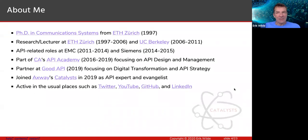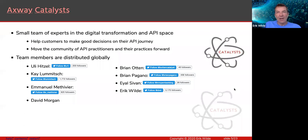A little intro and first very briefly about my background. My name is Eric Wilde, I'm a computer scientist by training. I have worked in a variety of companies and most recently I am with Axway's Catalyst team. The Catalyst team at Axway has the goal and the mission to help companies make good decisions in the API space.